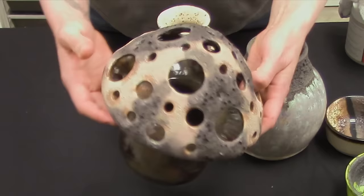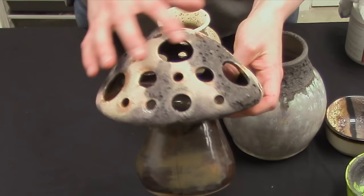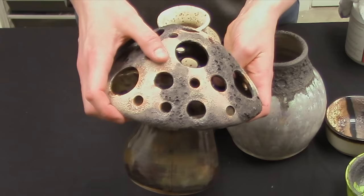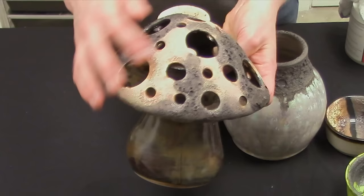Here we have our magma glazes used together on this slipcast mushroom. This was a white slipcast body fired to cone six. As you can see here, there is the variance between the cratering effect with the two different magma glazes. The dark magma has a lot deeper craters, whereas the light magma is more of a softer effect.